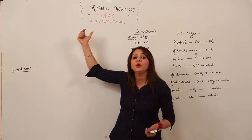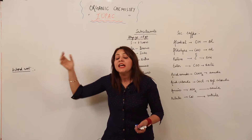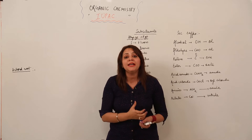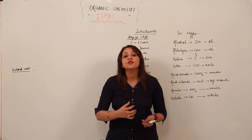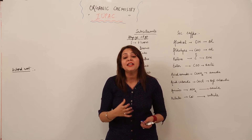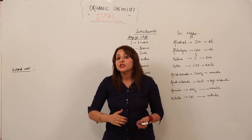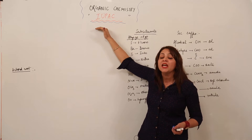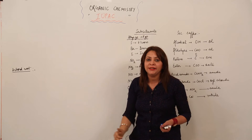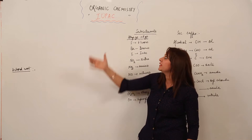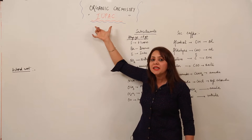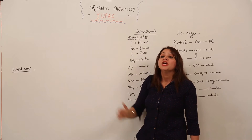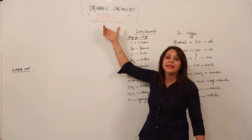That universally accepted naming came from the organization called IUPAC — the International Union of Pure and Applied Chemistry. It is a Geneva system of naming elements. IUPAC was launched in 1947 and was revised in 1993. Now let us see how it names elements accordingly.